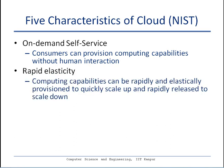Another important characteristic is rapid elasticity. This means that the computing resources a cloud provider offers are elastic in nature — they can be provisioned depending upon the consumer's demand. Depending upon your application's demands, you should be able to obtain more resources, and when your demand goes down, you should be able to relinquish those resources automatically.